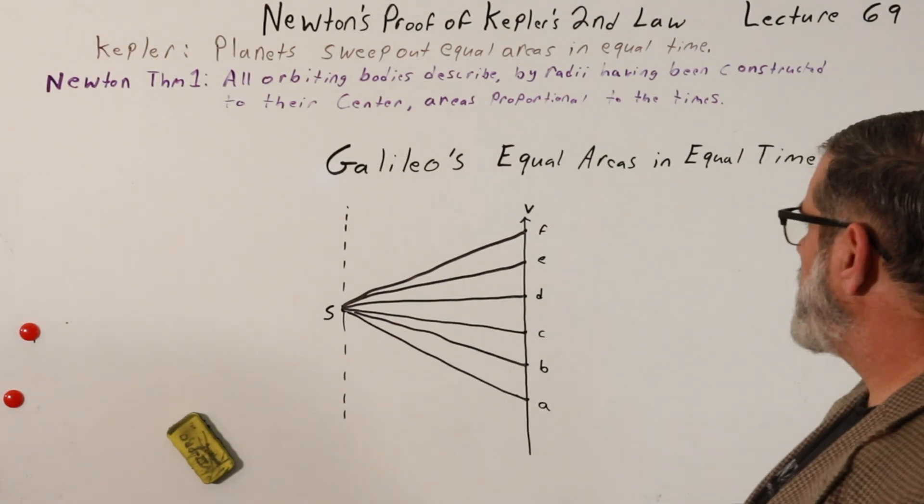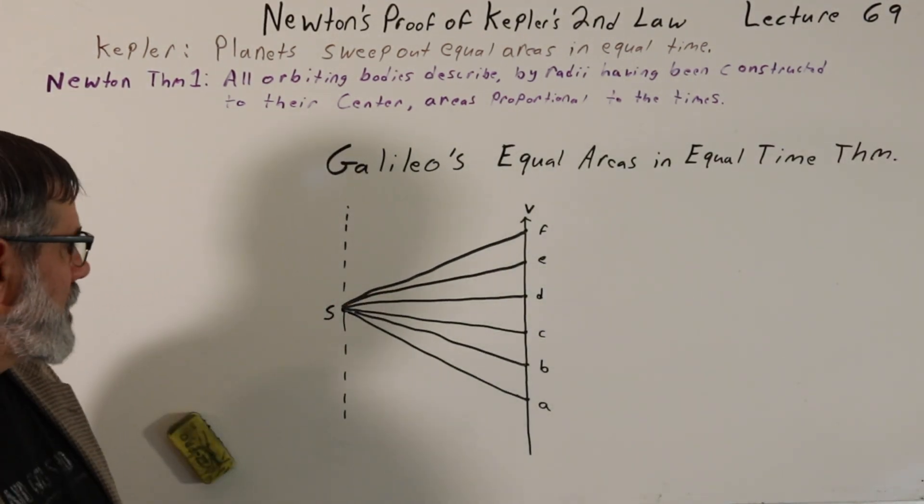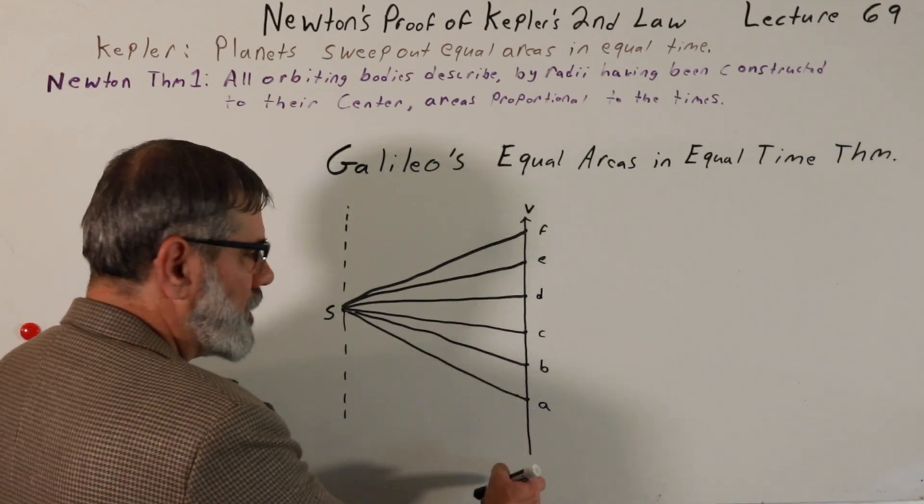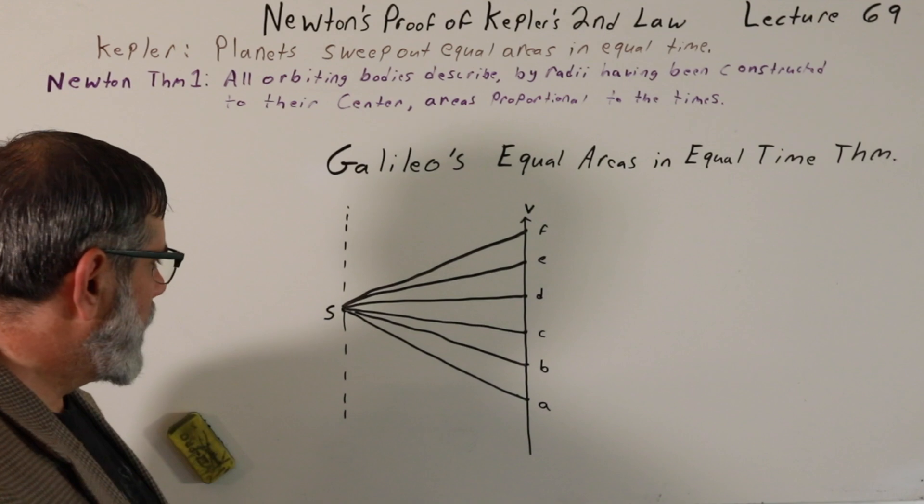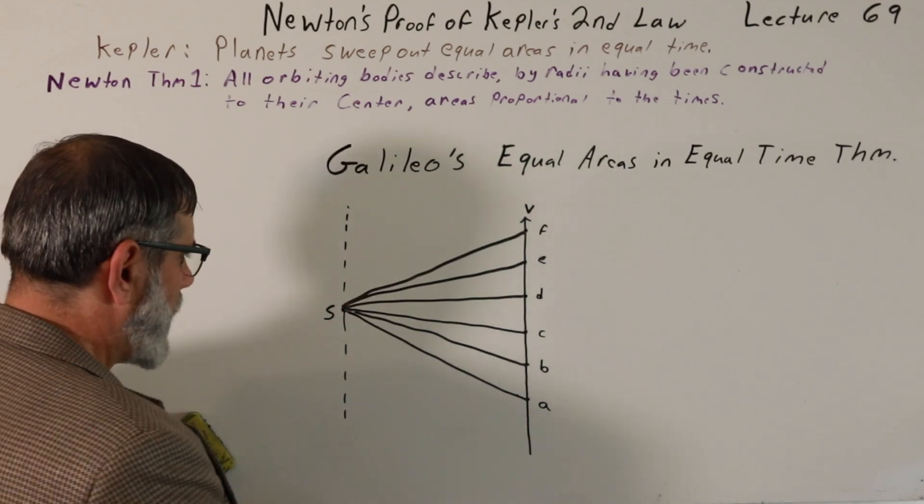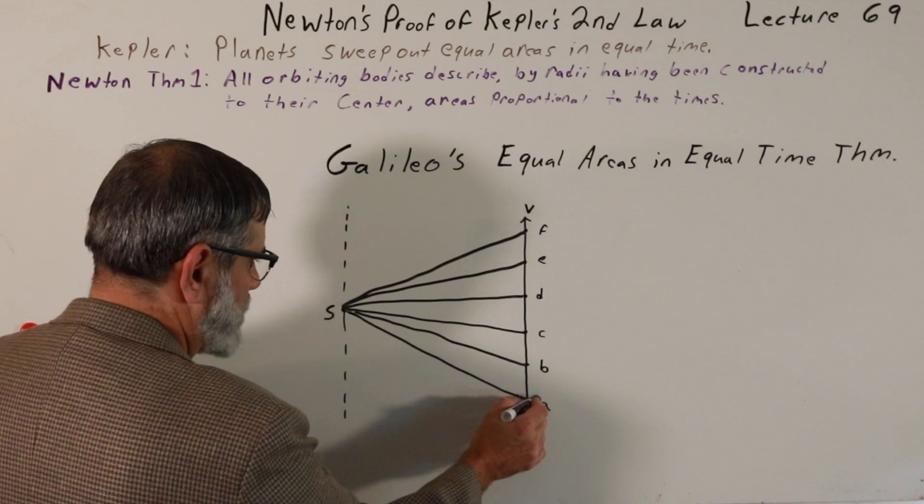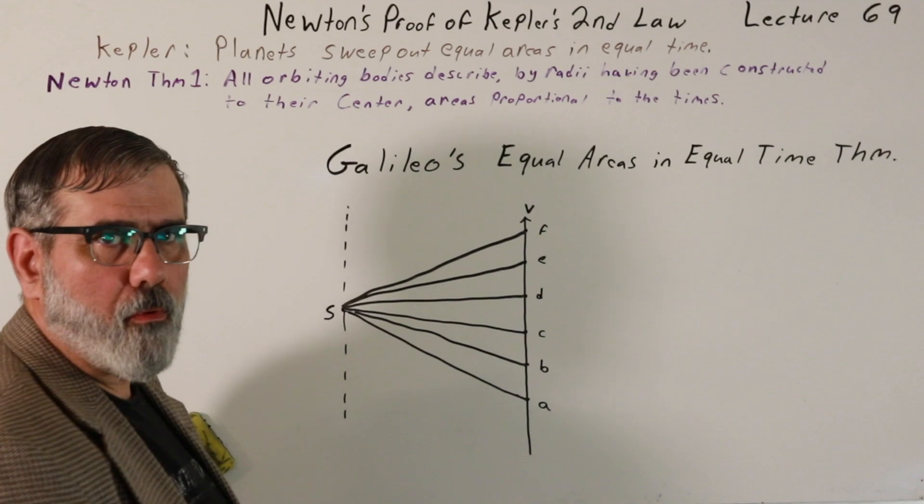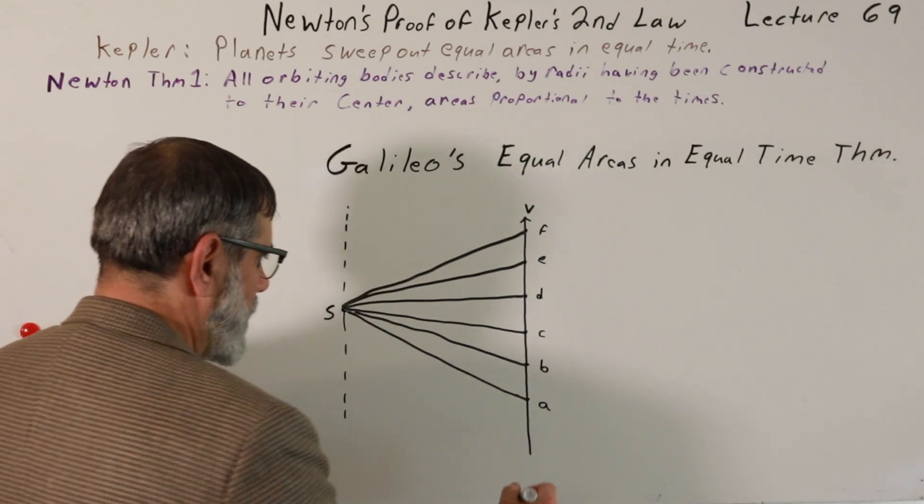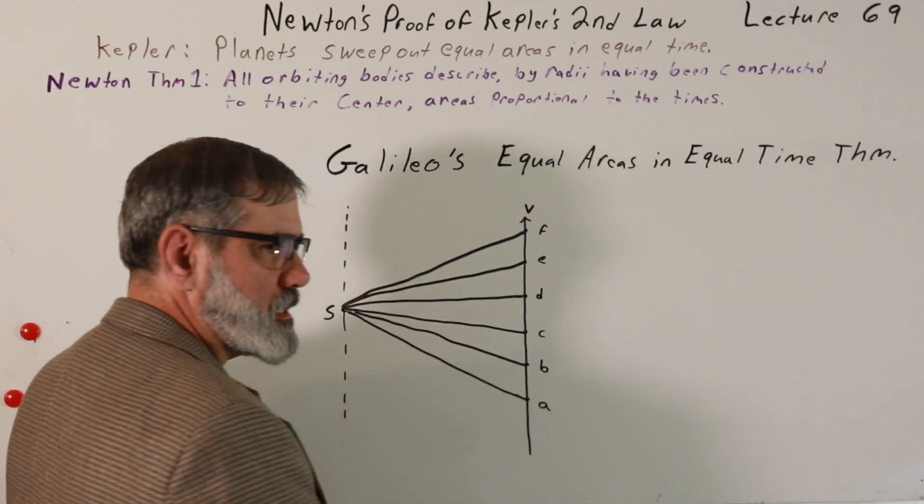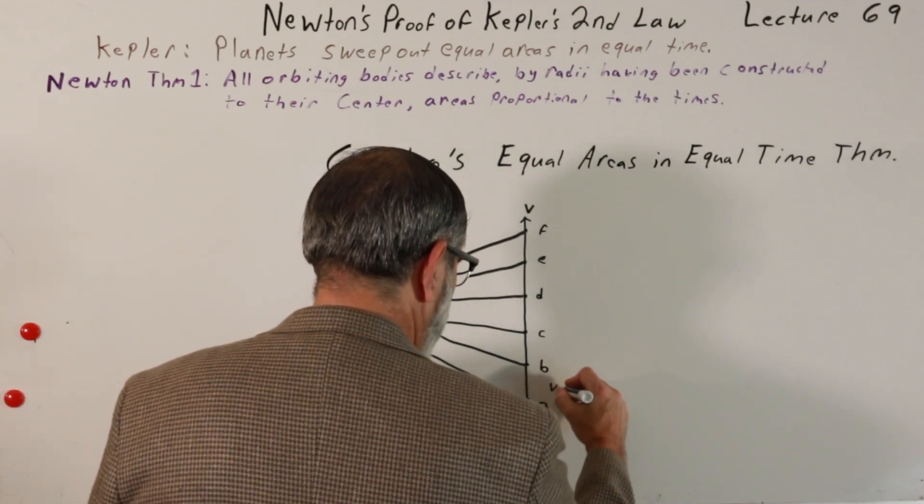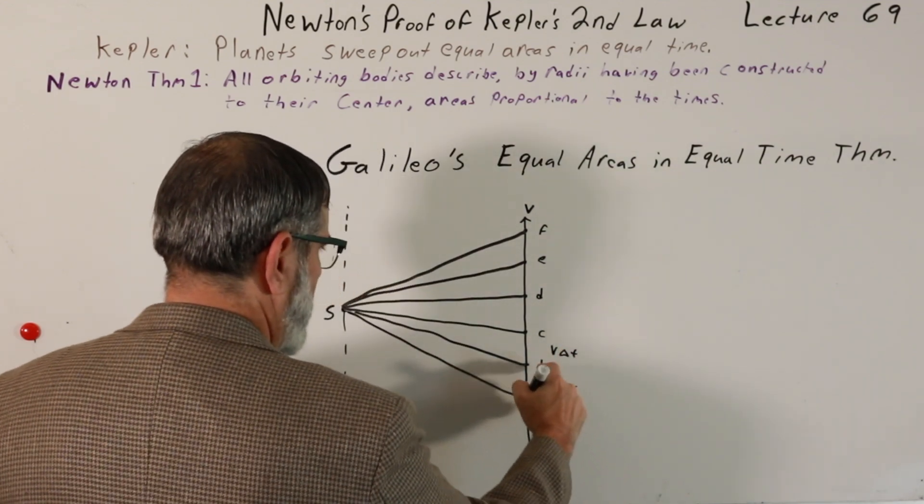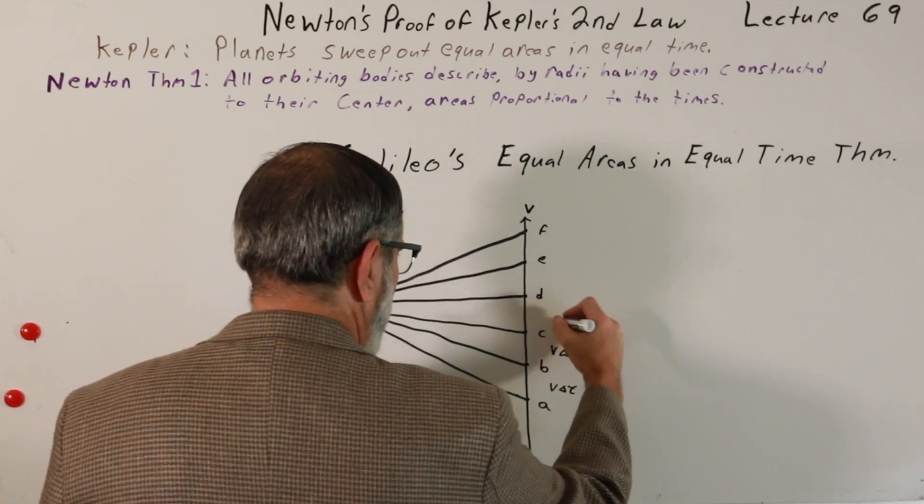First I want to mention Galileo's equal areas and equal time theorem. This is a result for just pure rectilineal motion. So we just have a particle moving in a straight line. We pick some arbitrary point, which I'll label S. And if we draw a line from S to each point along the particle's trajectory where the time between point A and point B is equal, these are equal time intervals. So how far has it traveled during that time period? The velocity times the time gives us the distance. So this is V delta T.